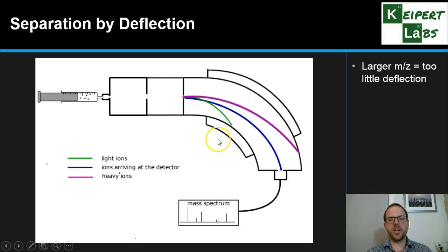If the mass-to-charge ratio is too large, we get too little deflection—the curved path is not curved enough, so they don't hit the detector. If we have a smaller mass-to-charge ratio, there's too much deflection. It's bent too much by the magnetic field and collides with the wall on the opposite side. Whereas those with just the right mass-to-charge ratio pass right through to the detector.